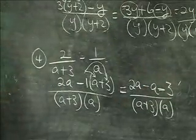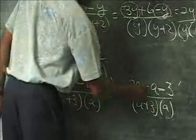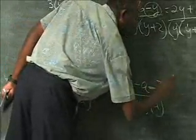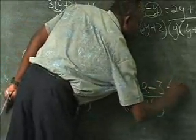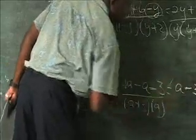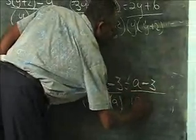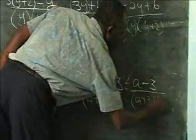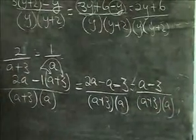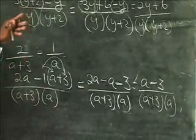The final step is to combine what can be combined. You have 2a minus 1a — it's like 2 apples and you take off 1, so you're left with just 1a. The minus 3 has nothing to combine with, so we write that back. The LCM is below: a plus three times a. So the final result is a minus 3 divided by (a plus 3)(a).